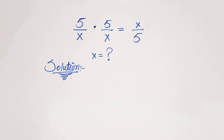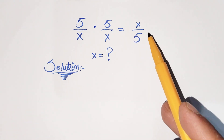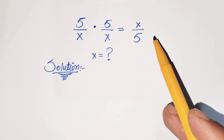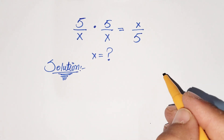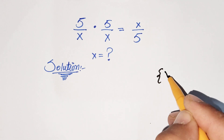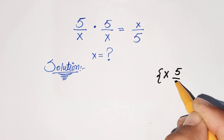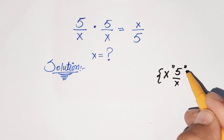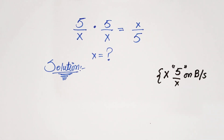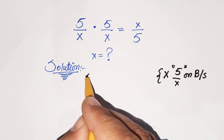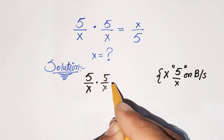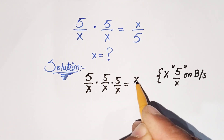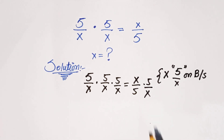First, we need to multiply by the reciprocal of x over 5, which is 5 over x. So we multiply 5 over x on both sides. We get 5 over x times 5 over x times 5 over x on the left, equal to x over 5 times 5 over x on the right.